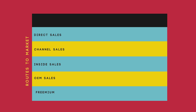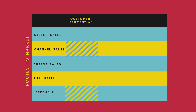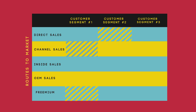We start out with customer segment number one and a product. Maybe I start out with free and I'll have a channel upsell — that's my coverage matrix for customer segment one with its corresponding product. Now let's say I want to go to a different customer segment with maybe the same or an augmented product. For customer segment two, the go-to-market is a direct sale covering that.